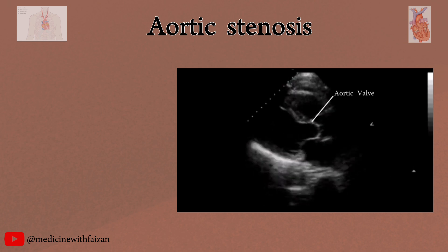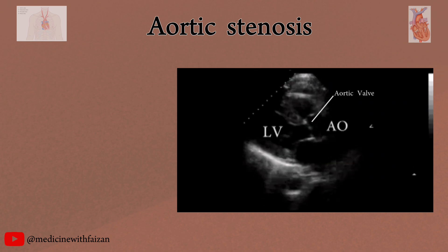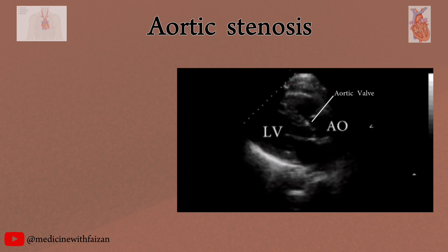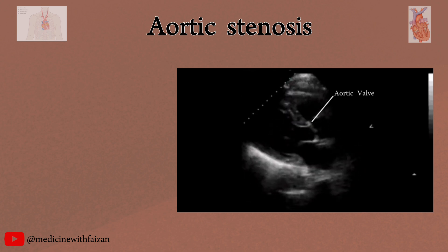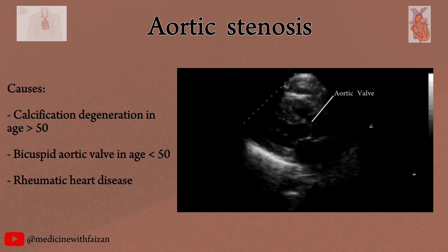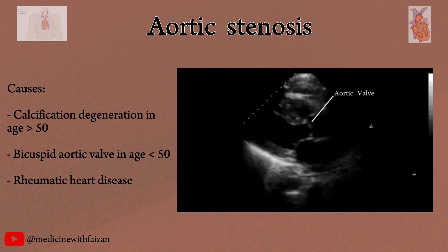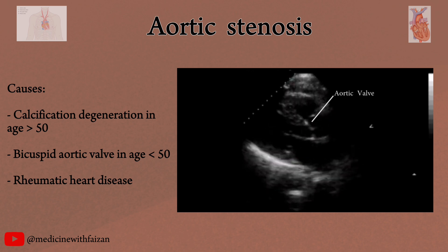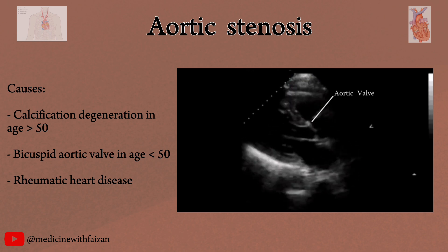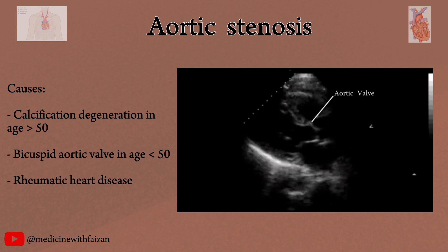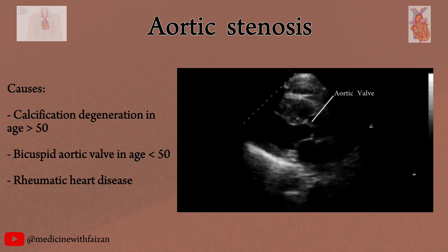Echocardiography in a patient with aortic stenosis will show significant calcification of the aortic valve and lack of leaflet mobility. Left ventricular hypertrophy may also be noted. The most common causes of aortic stenosis are calcification of a tri-leaflet valve if the patient is older than 50, congenital bicuspid valve if the patient is younger than 50, and rheumatic heart disease.